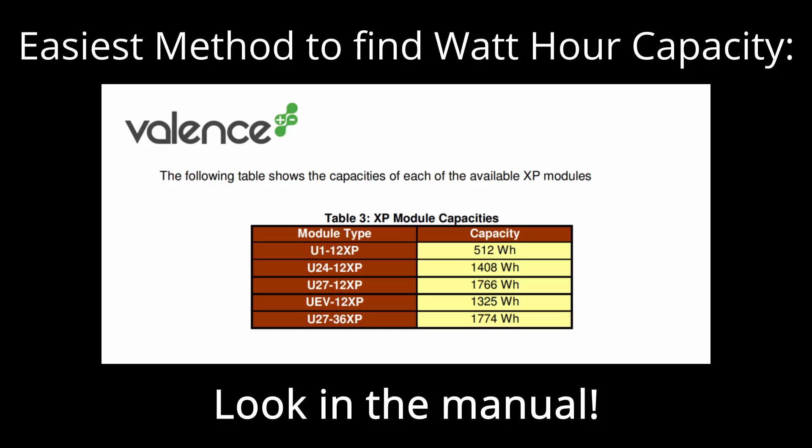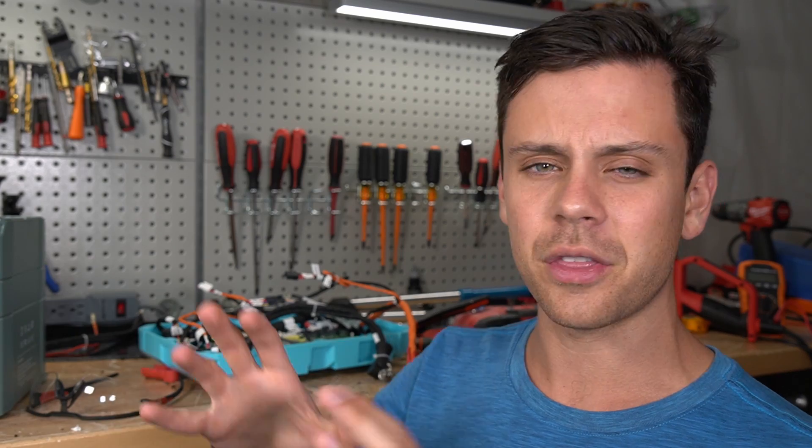What you want to do instead is ignore the amp hour, or use the amp hour to calculate the watt hour capacity. Typically in most manuals you can find the watt hour capacity. You can say, hey, that's how many watt hours are in there, and you can do a direct comparison without having to think about the voltage.